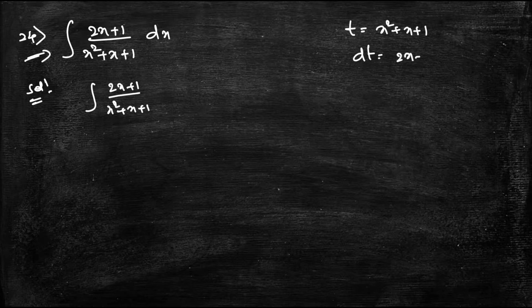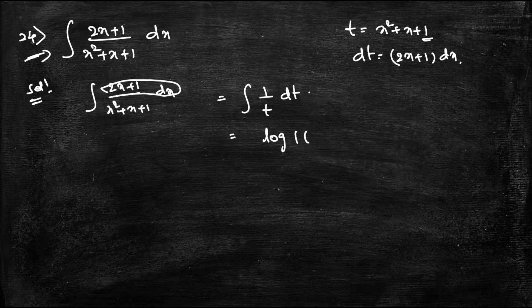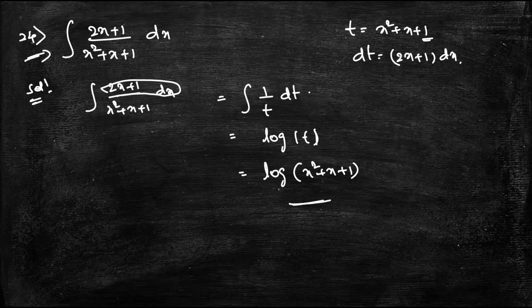Differentiating, dt = (2x+1) dx, so the numerator becomes dt. The integral becomes ∫(1/t) dt = log t. Substituting back, the answer is log(x²+x+1) + C. Now moving to the 25th question.